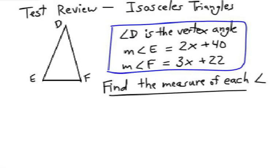This problem involves solving an isosceles triangle. Angle D is the vertex angle and angle E and angle F are measured, as you can see, in algebraic terms. Find the measure of each angle.